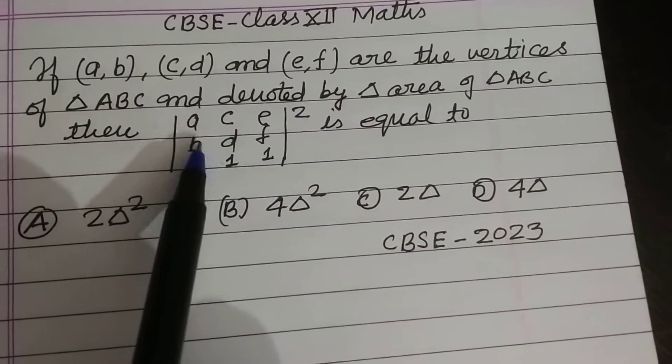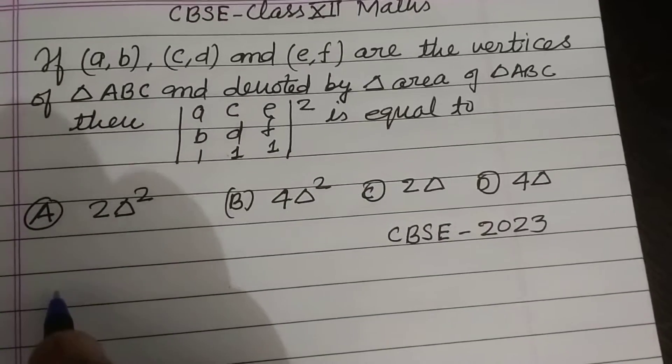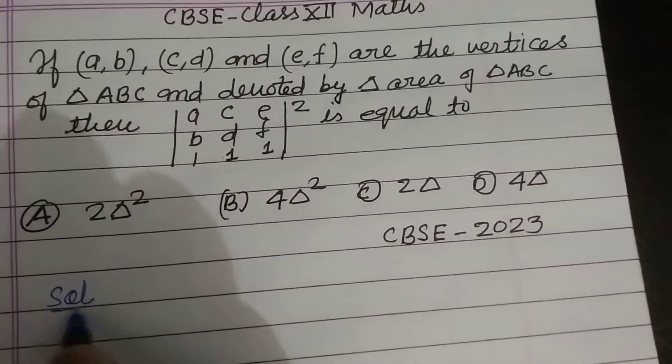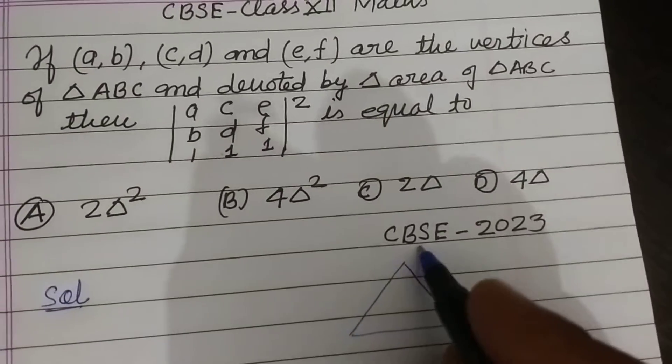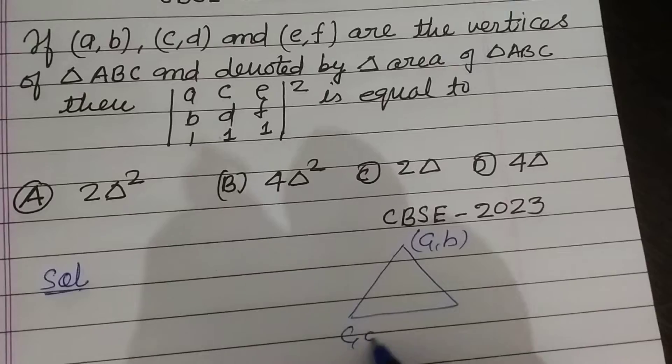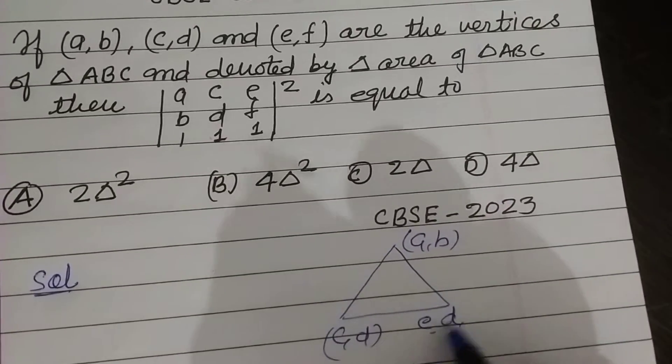...this determinant square is equal to. So students, here it is given that ABC: (a,b), (c,d), and (e,f) are the vertices of triangle.